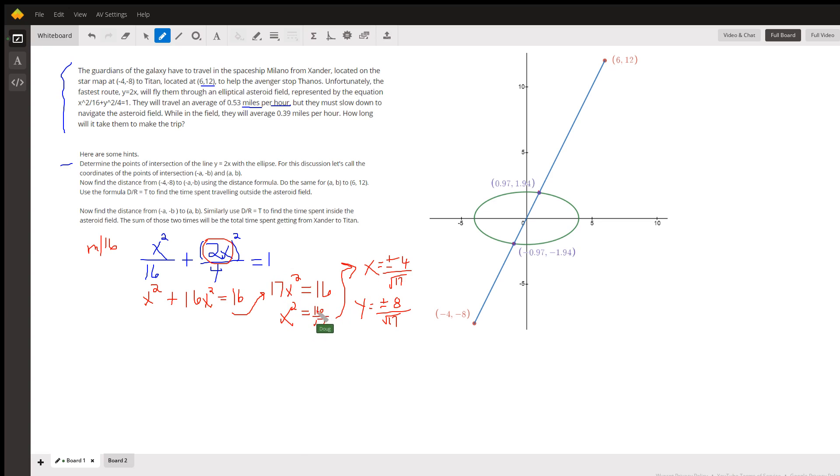x equals the square root of 16 over the square root of 17, or plus or minus 4 over the square root of 17. So this value right here, the plus value, is the x coordinate of this point. And since y is twice x, the corresponding y values are just double that.